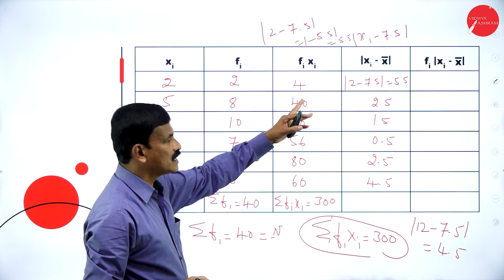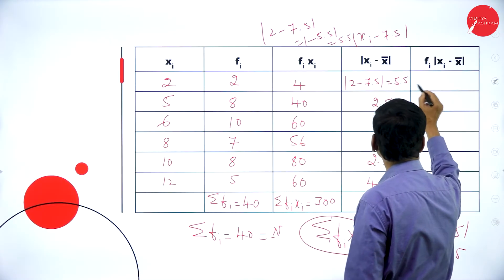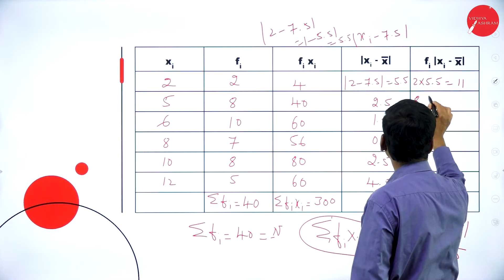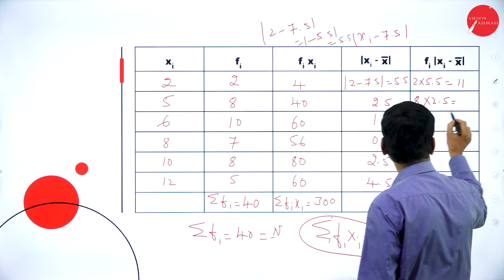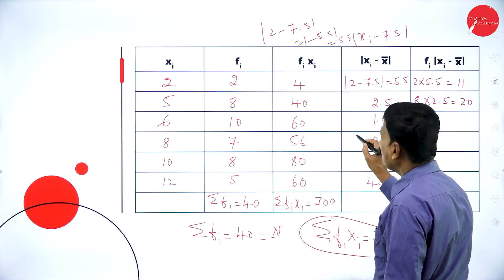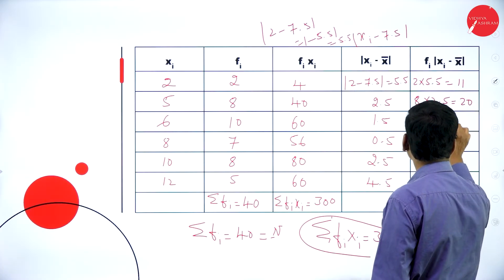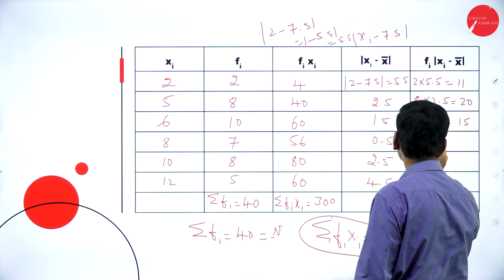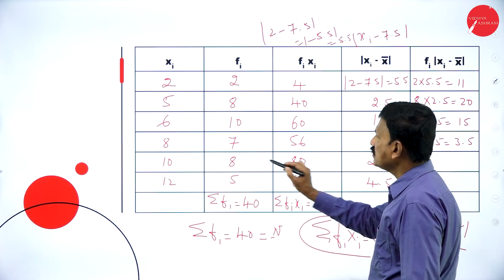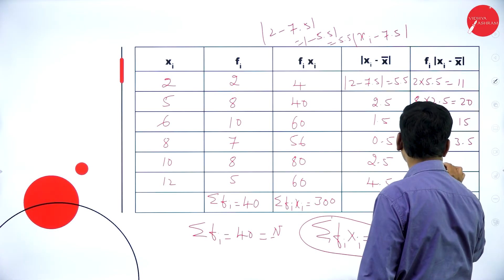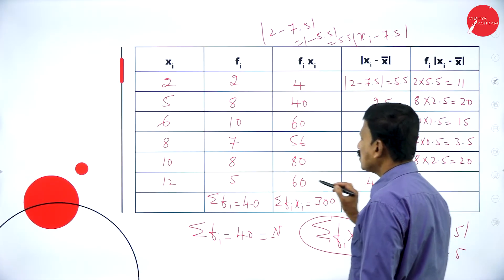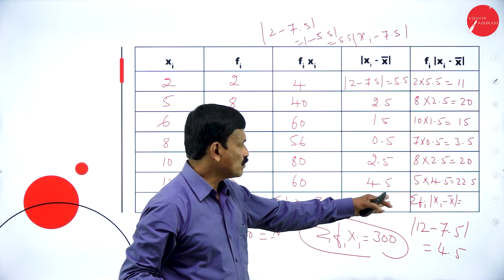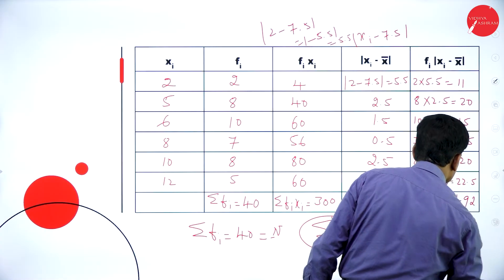Now multiply fi into |xi minus x-bar|. 2 into 5.5 is 11. 8 into 2.5 is 20. 10 into 1.5 is 15. 7 into 0.5 is 3.5. 8 into 2.5 is 20. 5 into 4.5 is 22.5. Adding all these gives sigma fi*|xi minus x-bar| equal to 92.